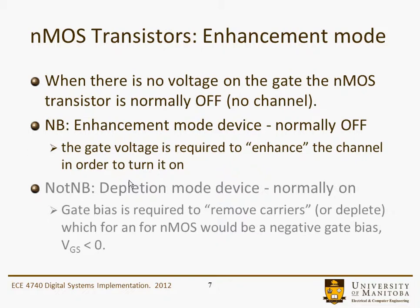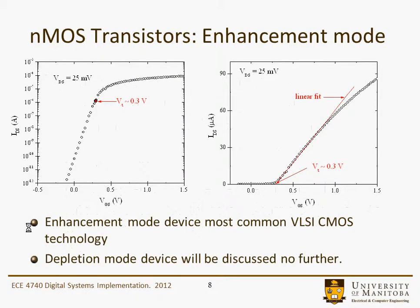This is not important and we won't talk about it further, but perhaps in the past you've learned about depletion mode devices — they're normally on and you put a voltage on the gate to deplete the channel. This is the NMOS transistor enhancement mode characteristics: IDS, the drain current, versus the gate voltage. You can see a region when increasing the gate voltage where the conductivity in the channel changes dramatically.